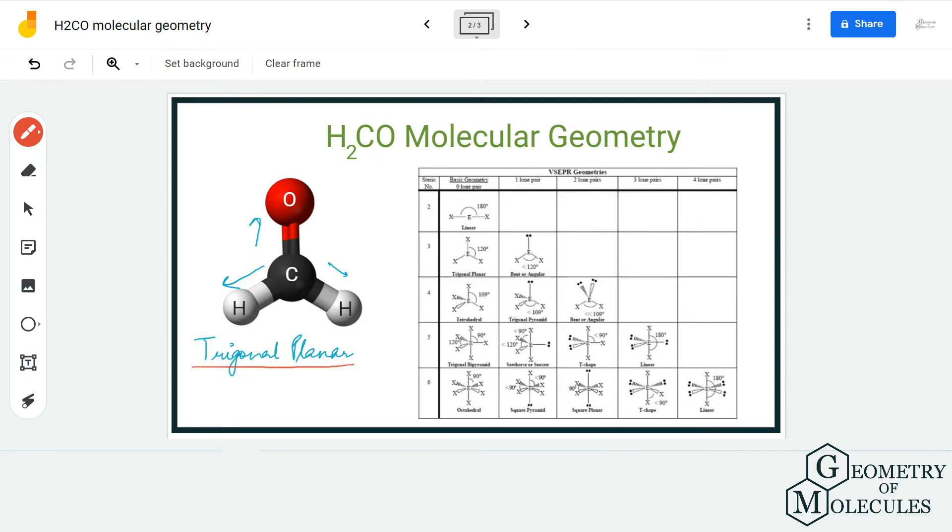The steric number for this central carbon atom would be three because there are three electron regions around it. When you look at this table and find out the steric number three with zero lone pairs, it corresponds to trigonal planar. So our assumption was right.